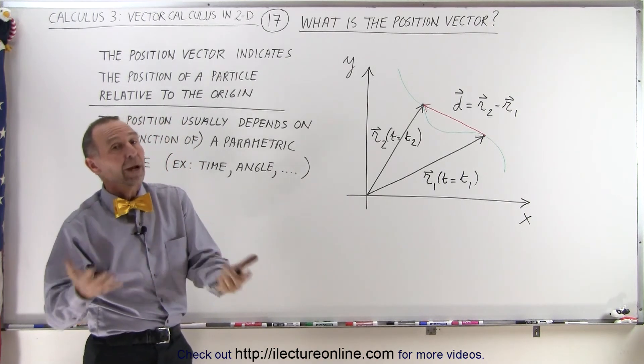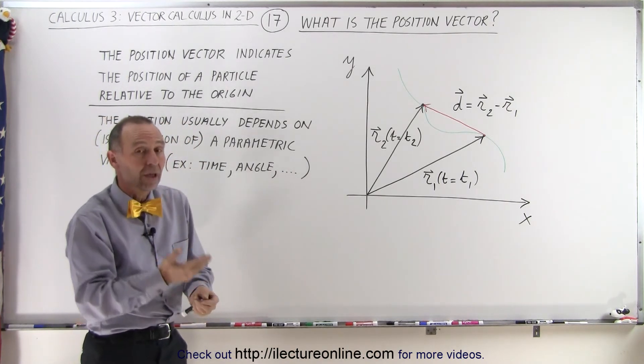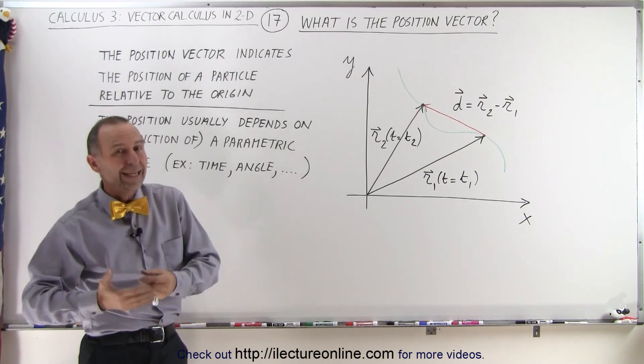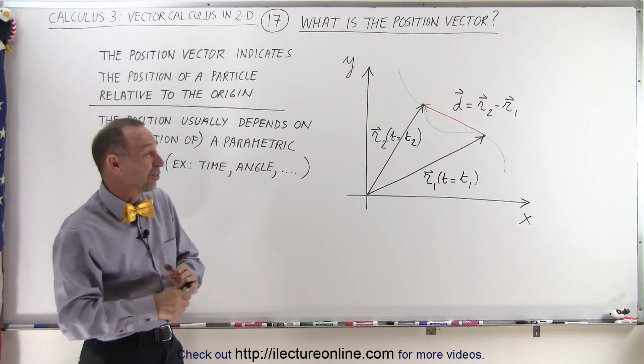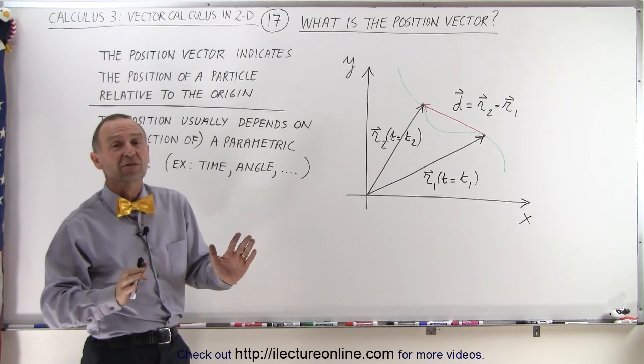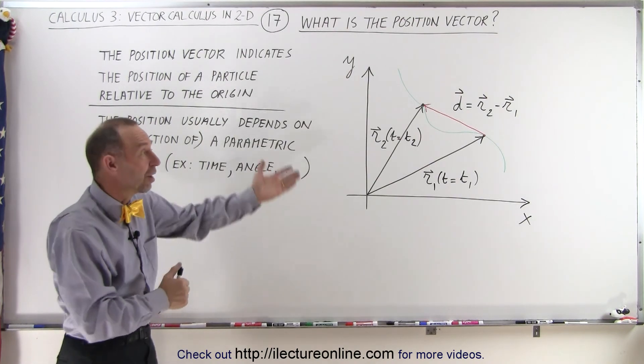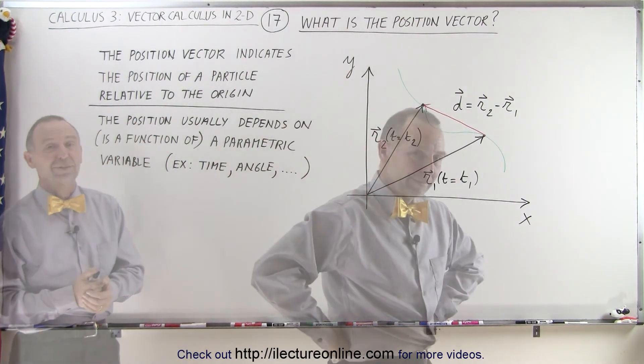The position vector will have an x and a y component in two-dimensional space, and an x, a y, and a z component in three-dimensional space. So it's nothing more, nothing mysterious, it's simply that, and that's how we define a position vector.